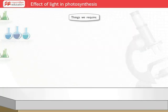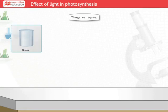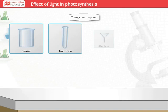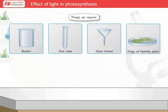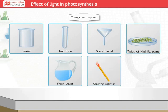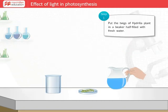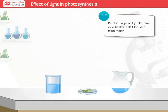The apparatus and materials you require to perform this experiment are a beaker, a test tube, a glass funnel, twigs of hydrilla plant, water, and a glowing splinter. Let's get started. Take a beaker and fill it with water.